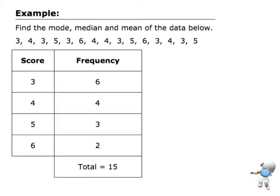So let's have a look at an example. So I've got this set of data here, and if I look at the score of three, I've got one, two, three, four, five, six threes. So I would list that as one, two, three, four, five, six threes.